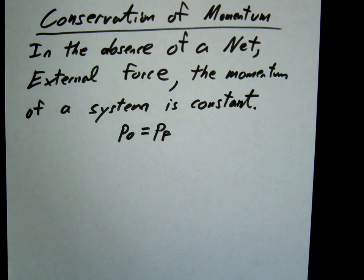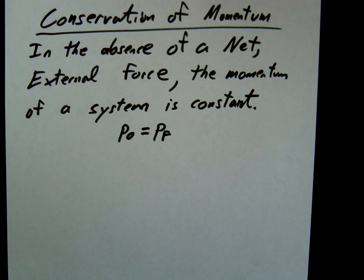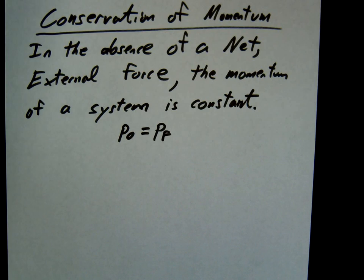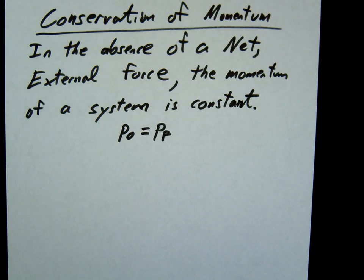Let me show you an example where it would be conserved. Let's take these two cars here. If I have one car traveling this way, it has a momentum. When it collides with the second car, it transfers its momentum to the second car. What should be true about the initial momentum and the final momentum? It should be the same. So if this had 100 kilogram meters per second, it transfers it to this car, 100 kilogram meters per second as well. Momentum would be conserved.